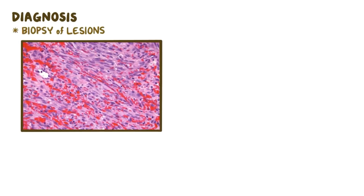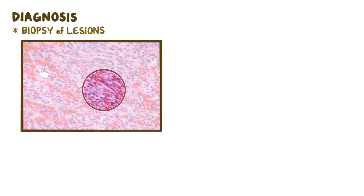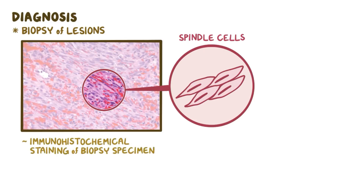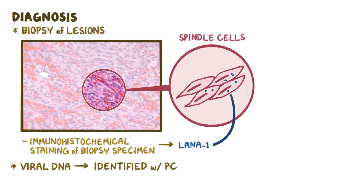Diagnosis of Kaposi's sarcoma requires a biopsy of the lesions. Microscopic examination can show tumor cells with a characteristic abnormal elongated shape called spindle cells. Immunohistochemical staining of biopsy specimens can detect the presence of LANA1 within the spindle cells, confirming the diagnosis. Finally, viral DNA can be identified with PCR.